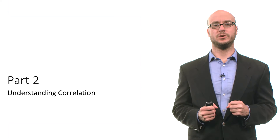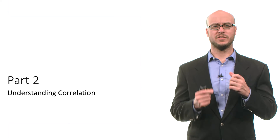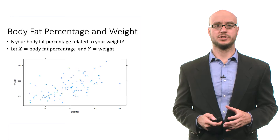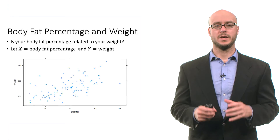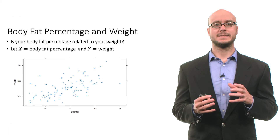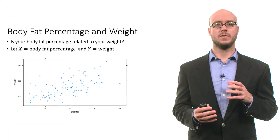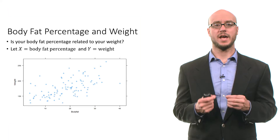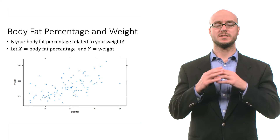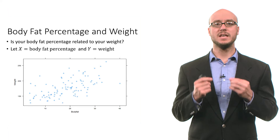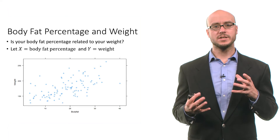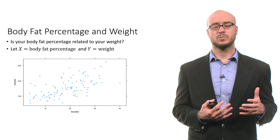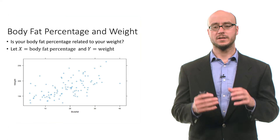Welcome to part two in our discussion of covariance and correlation. Here's a data set of body fat percentage and weight. This is a data set of individuals, and our question is: is body fat percentage related to your weight?